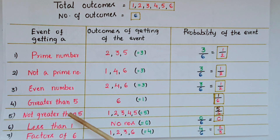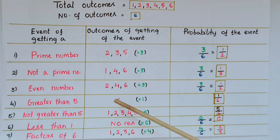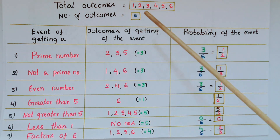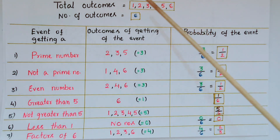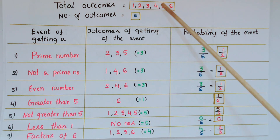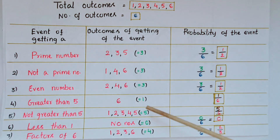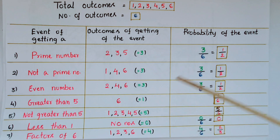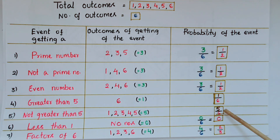Next one is not greater than 5. So here the outcomes are 1, 2, 3, 4, 5 — a total of 5 outcomes. So probability of this event is 5 by 6.